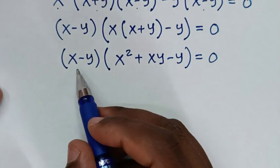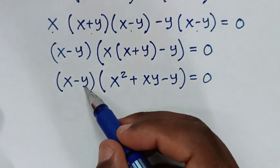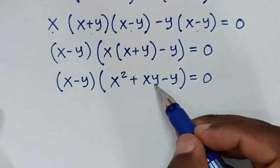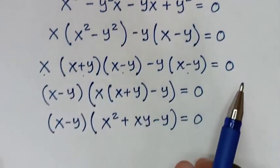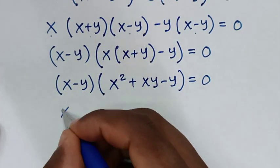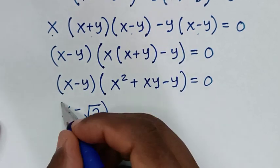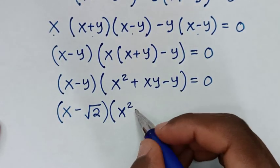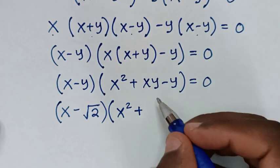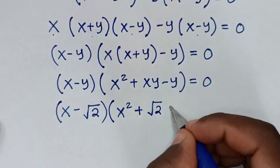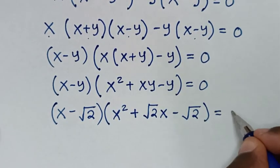From here, we substitute back y equals square root of 2 into the equation. It becomes: (x minus square root of 2) times (x² plus square root of 2 times x minus square root of 2) equals 0.